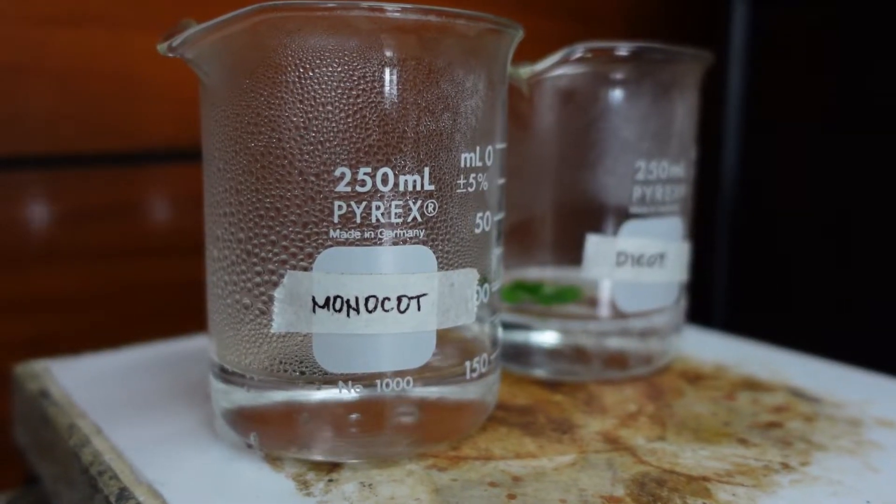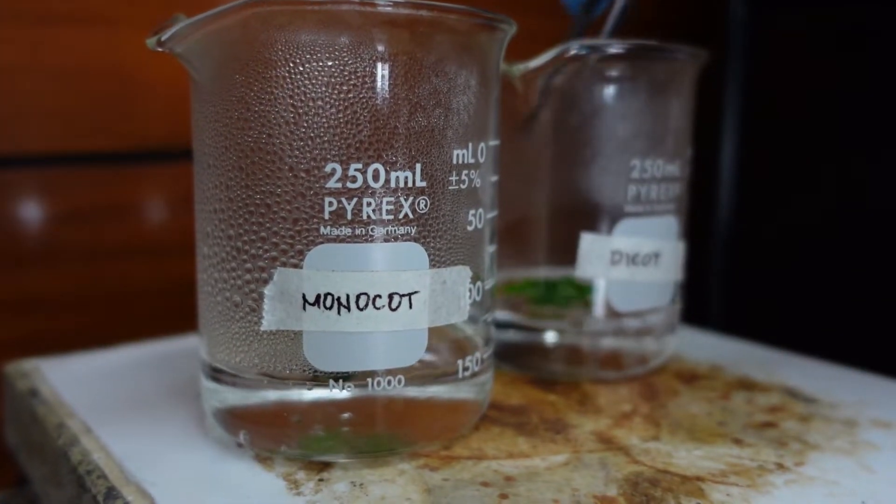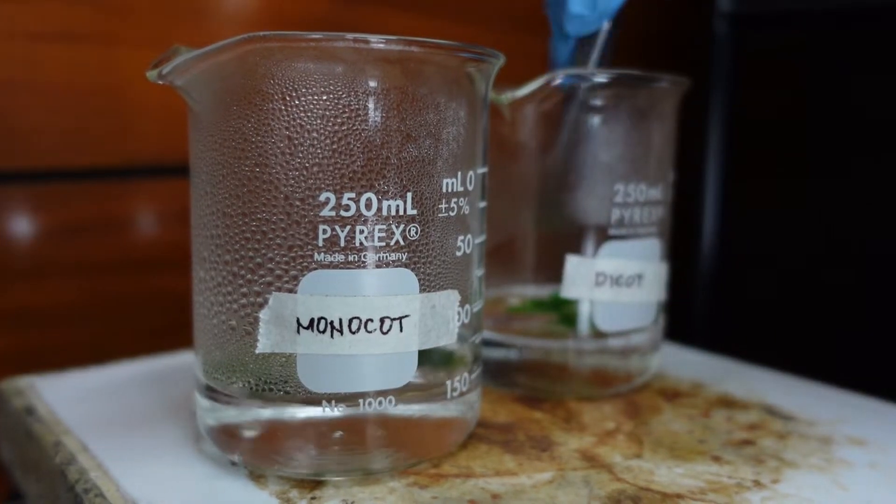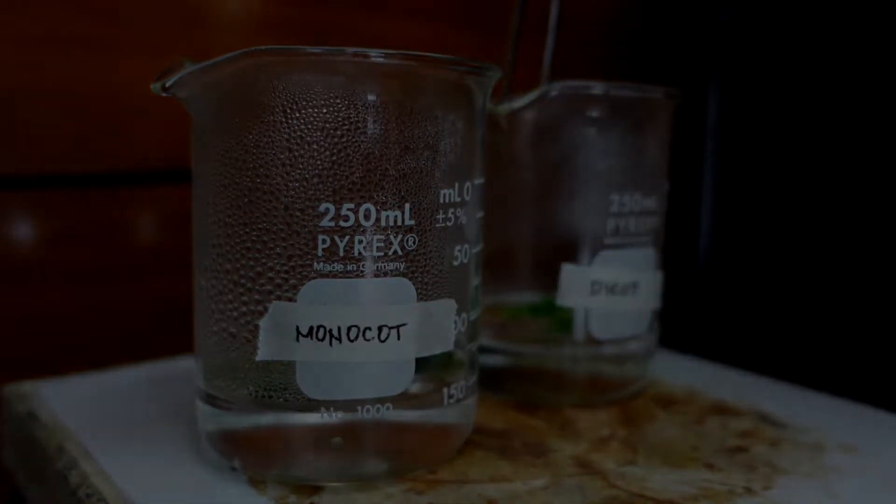Boil the weighed leaf of each species in separate beakers with 50 ml water for 10 minutes. Don't forget to use distilled water.